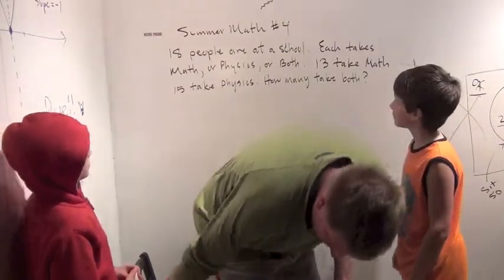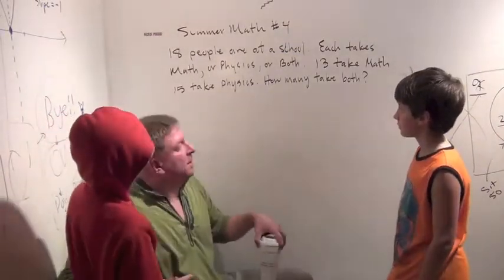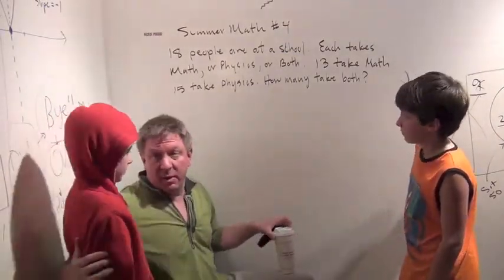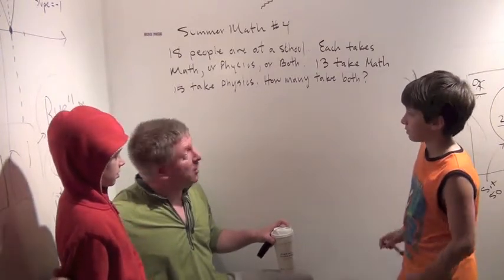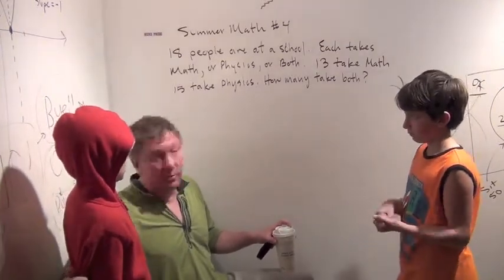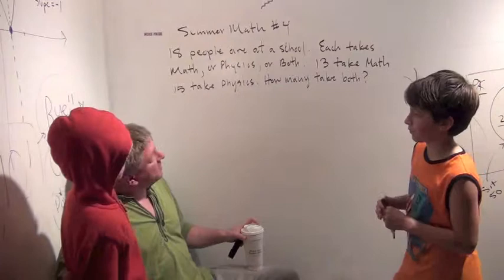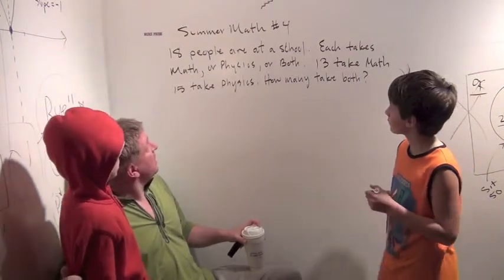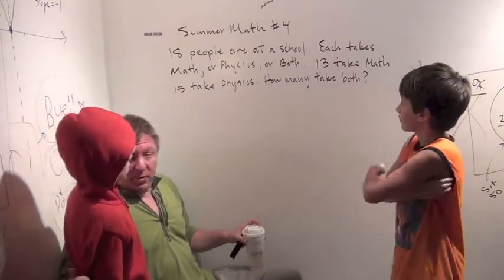So we're doing our section of Venn Diagrams, right? And we did some really challenging Venn Diagram problems today, so we're going to do one that's not quite as complicated for our movie, okay? So 18 people are at a school.